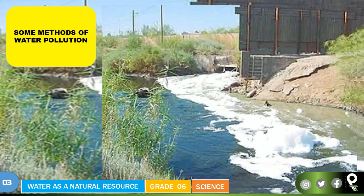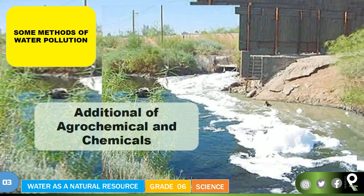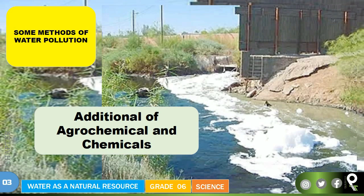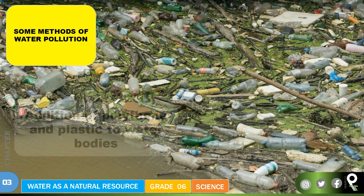Some methods of water pollution — first is the addition of agrochemicals and chemicals. Farmers use chemicals on their agricultural land, then throw the bottles into water bodies. Their waste water also washes into streams, and people who consume this water become sick. Addition of agrochemicals and chemicals is a dangerous thing farmers are doing.